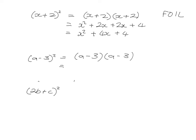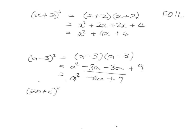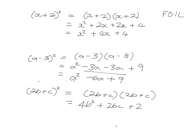For (a-3) squared — that's (a-3)(a-3): First — a times a is a squared. Outside — minus 3a. Inside — minus 3a. Last — negative 3 times negative 3 is plus 9. The two middle terms combine to give minus 6a, so the answer is a squared minus 6a plus 9. For (2b+c) squared: First — 4b squared. Outside — 2bc. Inside — 2bc. Last — c squared. Combining like terms gives 4b squared plus 4bc plus c squared.